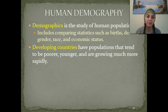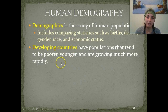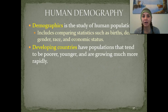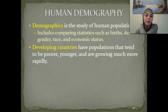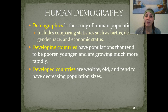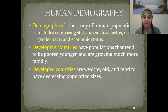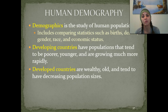A developing country basically has populations that tend to be much poorer. They're very young — they're not growing to an old age, they typically die off younger — and they're growing much more rapidly. Whereas in developed countries, they're much more wealthy, the population is older, people live to an older age, and they tend to have decreasing population sizes instead of increasing population sizes.